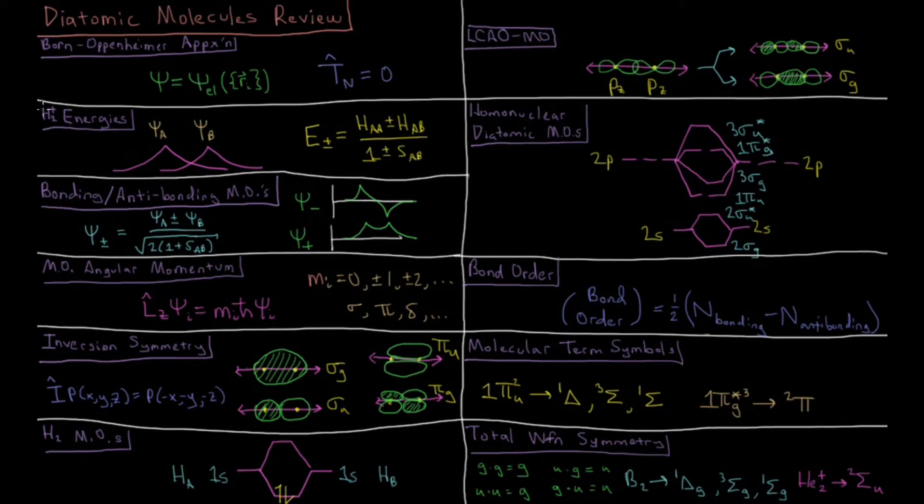The simplest possible molecule we can have is the hydrogen molecular ion, H2+, and the simplest possible basis set we can have for H2+ is having a 1s orbital centered around each atomic nucleus, 1sa and 1sb.